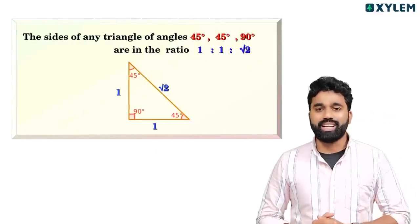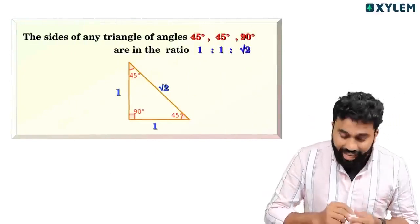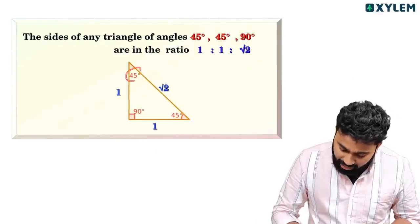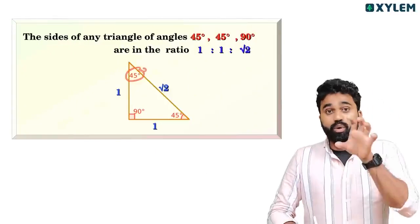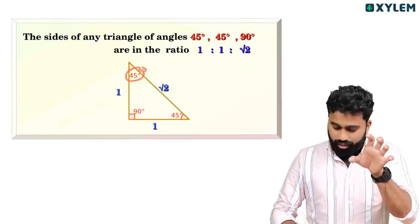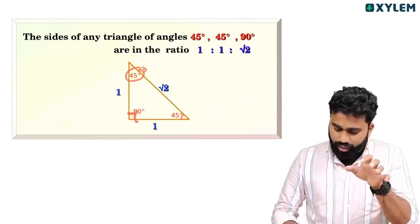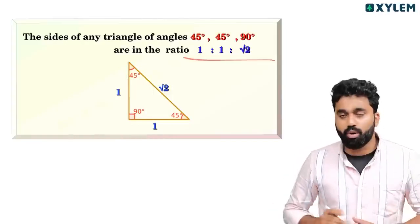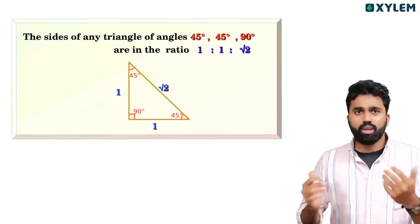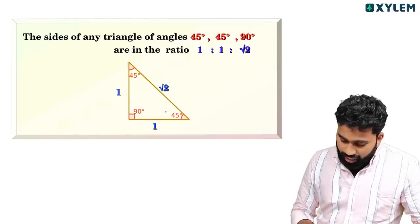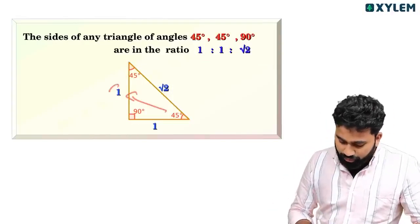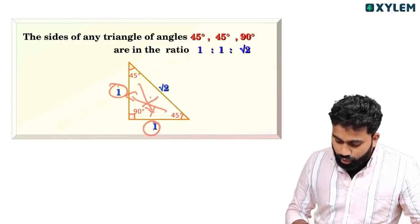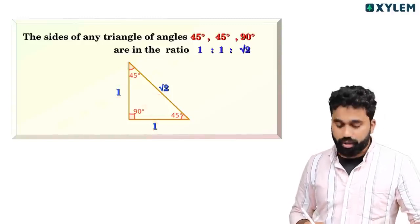If you have a right angle triangle where the angles are 45°, 45°, and 90°, this concept is very important. The sides are in ratio 1:1:root 2. So the side opposite 45° is 1, and the hypotenuse is root 2.